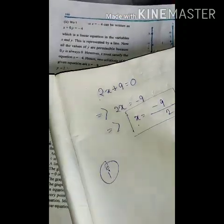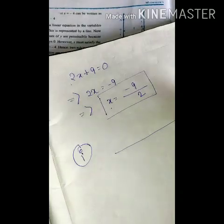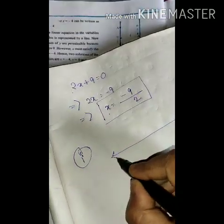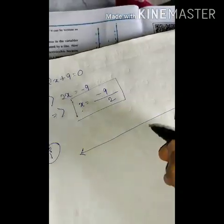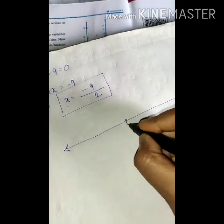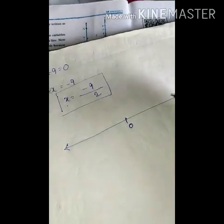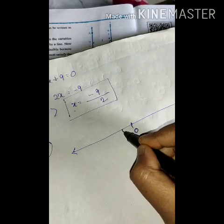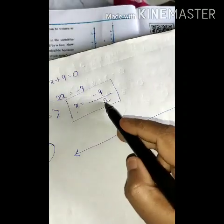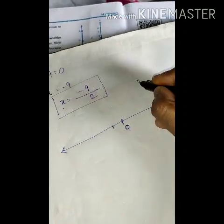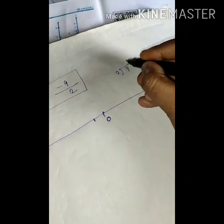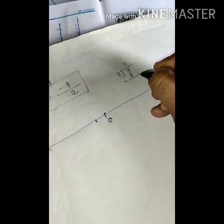To represent one variable, I'll use a single number line. We need to mark 0, and minus 9 by 2, which is 4 and a half.